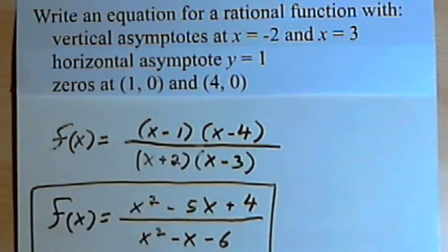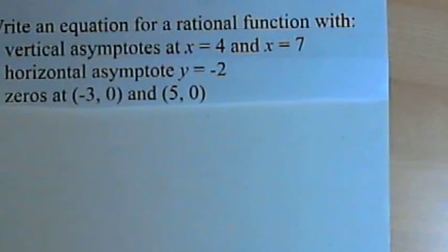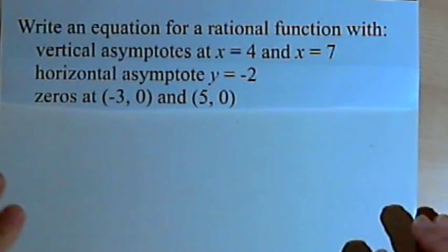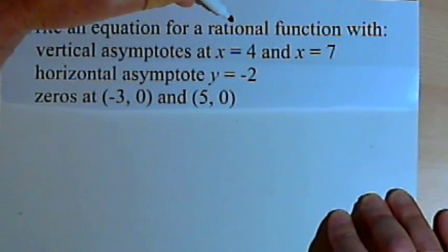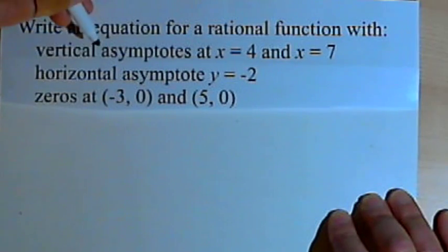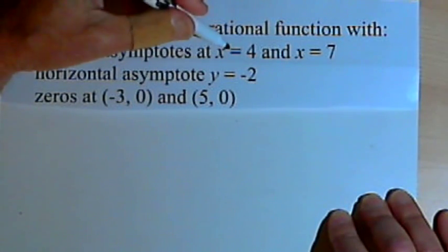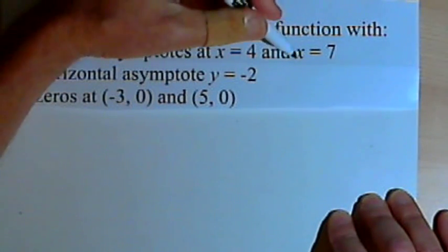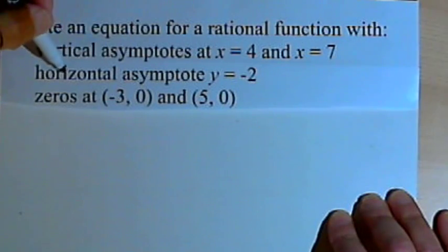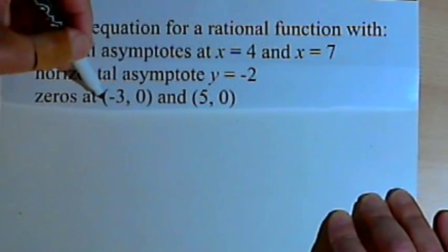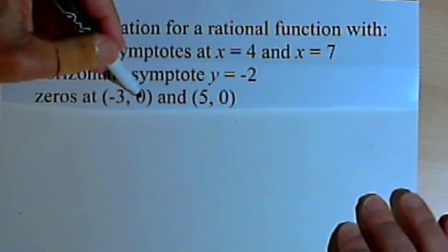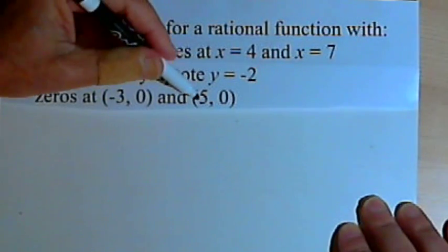Let's look at one more. Write an equation for a rational function with vertical asymptotes at x equals 4 and x equals 7, a horizontal asymptote at y equals negative 2, and zeros at negative 3 comma 0 and 5 comma 0.